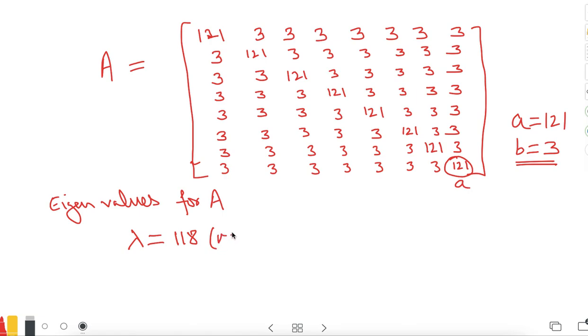Then there is the eigenvalue which is calculated as n minus 1 times B plus A. So clearly you have 8 minus 1, which is 7, times 3, which is 21, plus 121, which is 142.